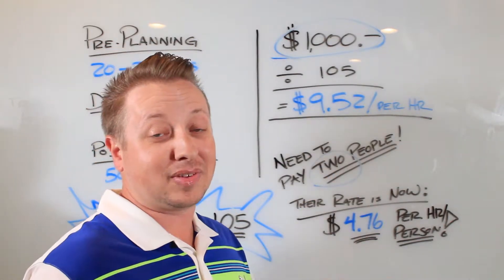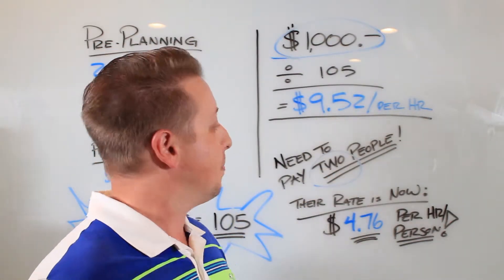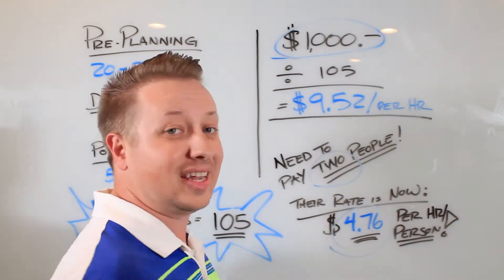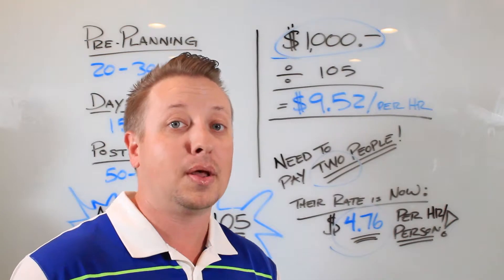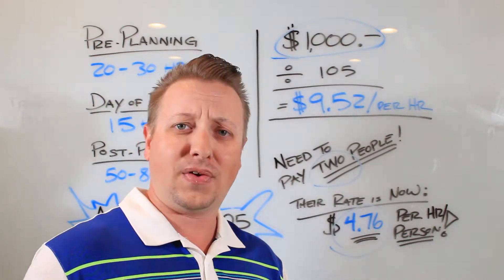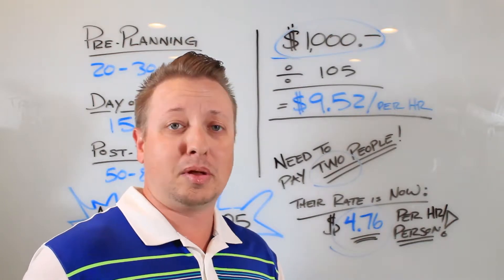And sometimes there might even be three people. But within that, their rate is now four dollars and 76 cents per person per hour. That's less than minimum wage. Is that fair? Because they're making less than minimum wage, it's not even legal.